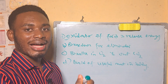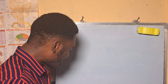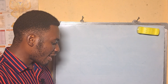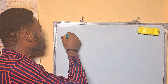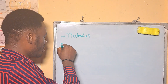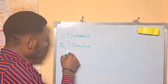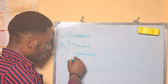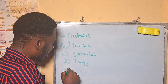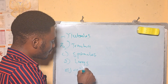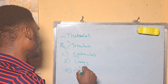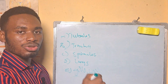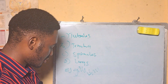What is the name of the respiratory organ of the crab? A: tubules, B: trachea, C: spiracles, D: lungs, E: gills. The answer is E, gills, because crabs live in water and gills help them to respire.